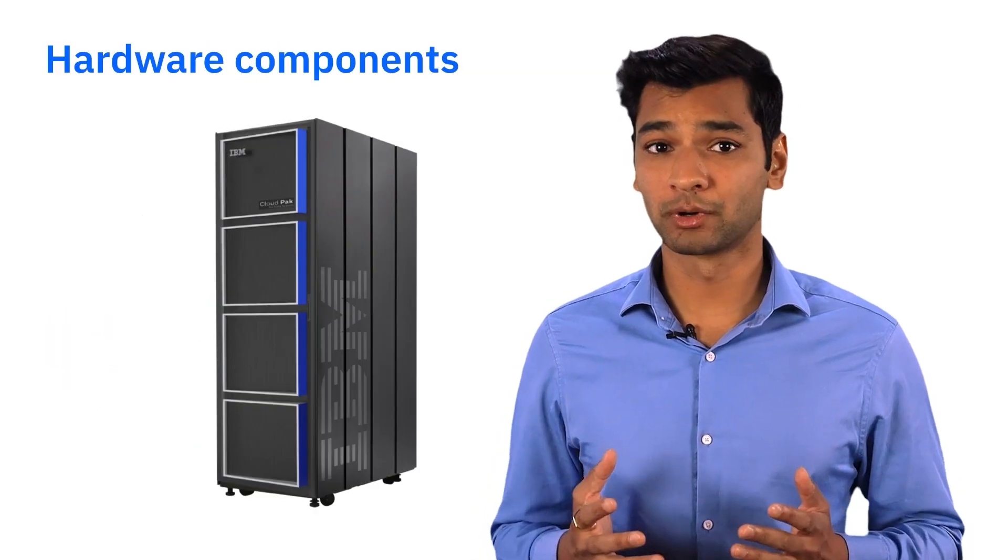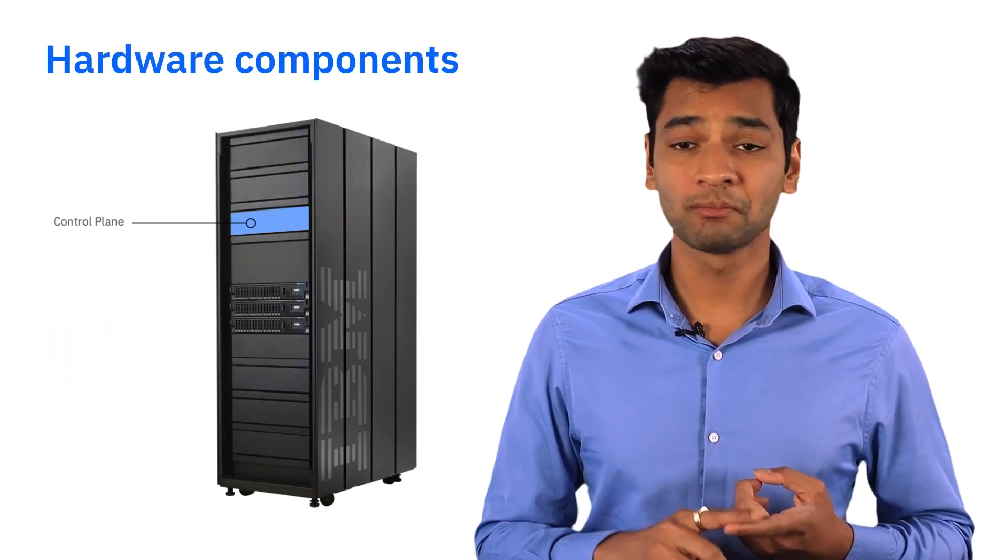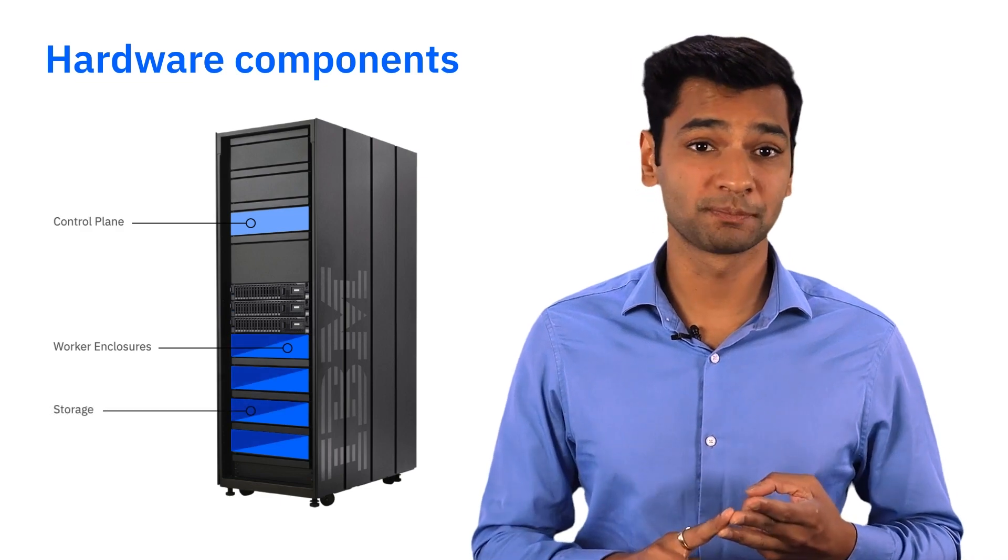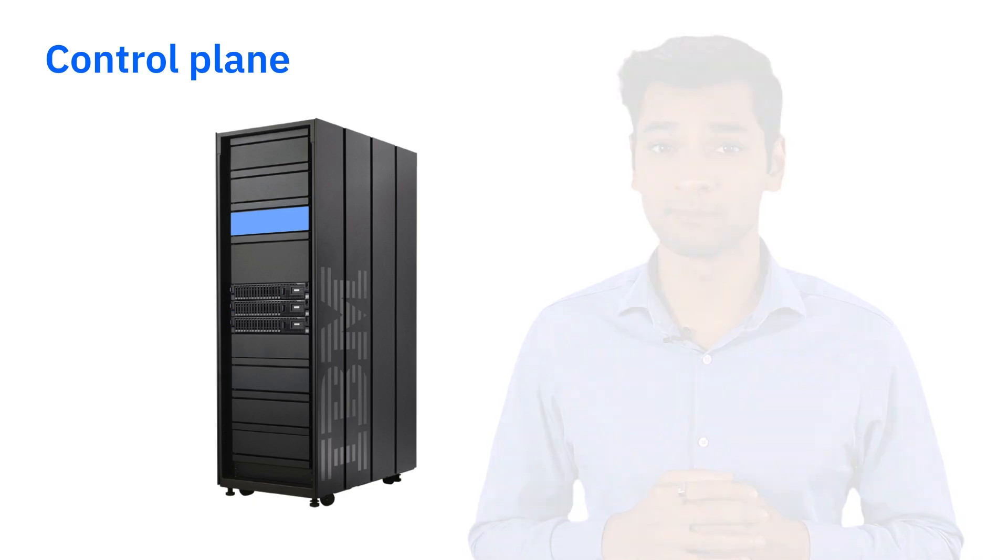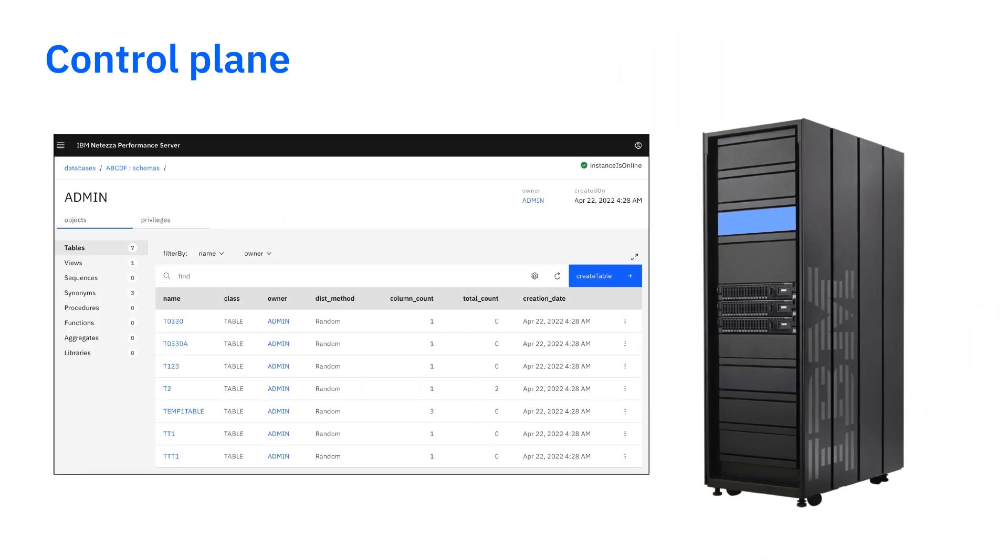It has three main hardware components: a control plane, worker enclosures and storage. As its name implies, the control plane is a group of nodes assigned a control role in the system. If we zoom in on that control plane, we see the hosts running the Netezza software and utilities. The host functions as the brain controlling and coordinating all system activity.